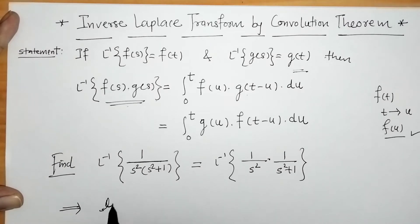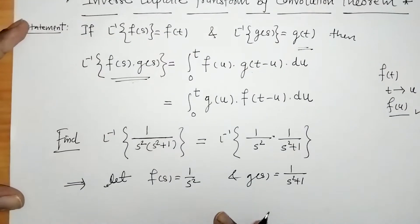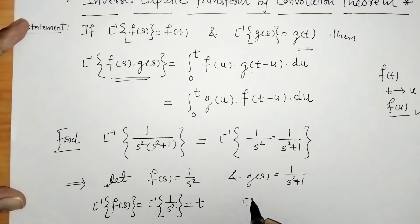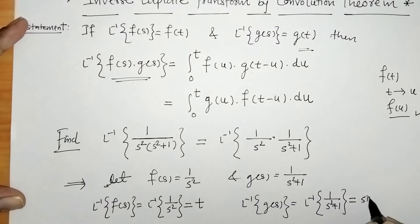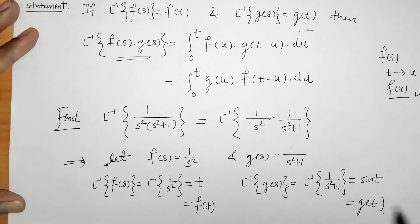Let F(s) = 1/s² and G(s) = 1/(s² + 1). Now we can find the inverse of each. L⁻¹{F(s)} = L⁻¹{1/s²} = t, and L⁻¹{G(s)} = L⁻¹{1/(s² + 1)} = sin(t). So we have found f(t) = t and g(t) = sin(t).